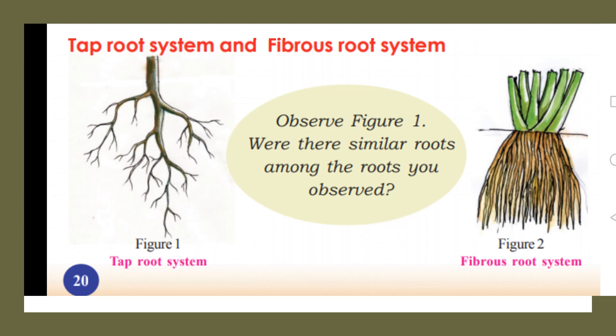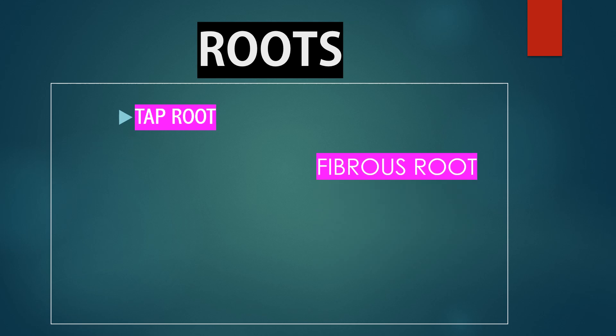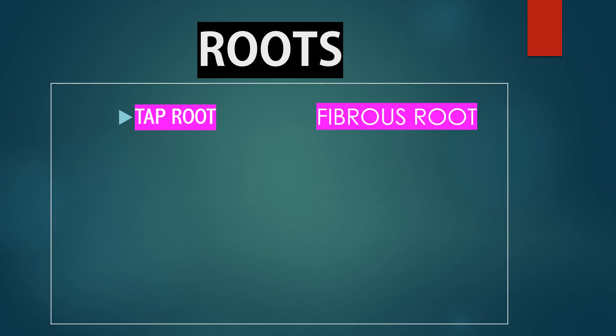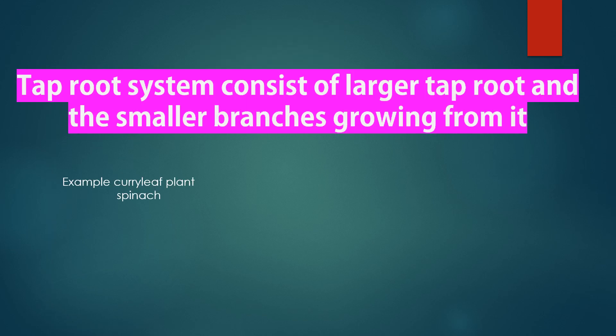The first one is the tap root system and the second one is the fibrous root system. Roots are divided into two types: the first one is tap root and the second one is fibrous root. The tap root consists of a larger tap root and smaller branches growing from it.